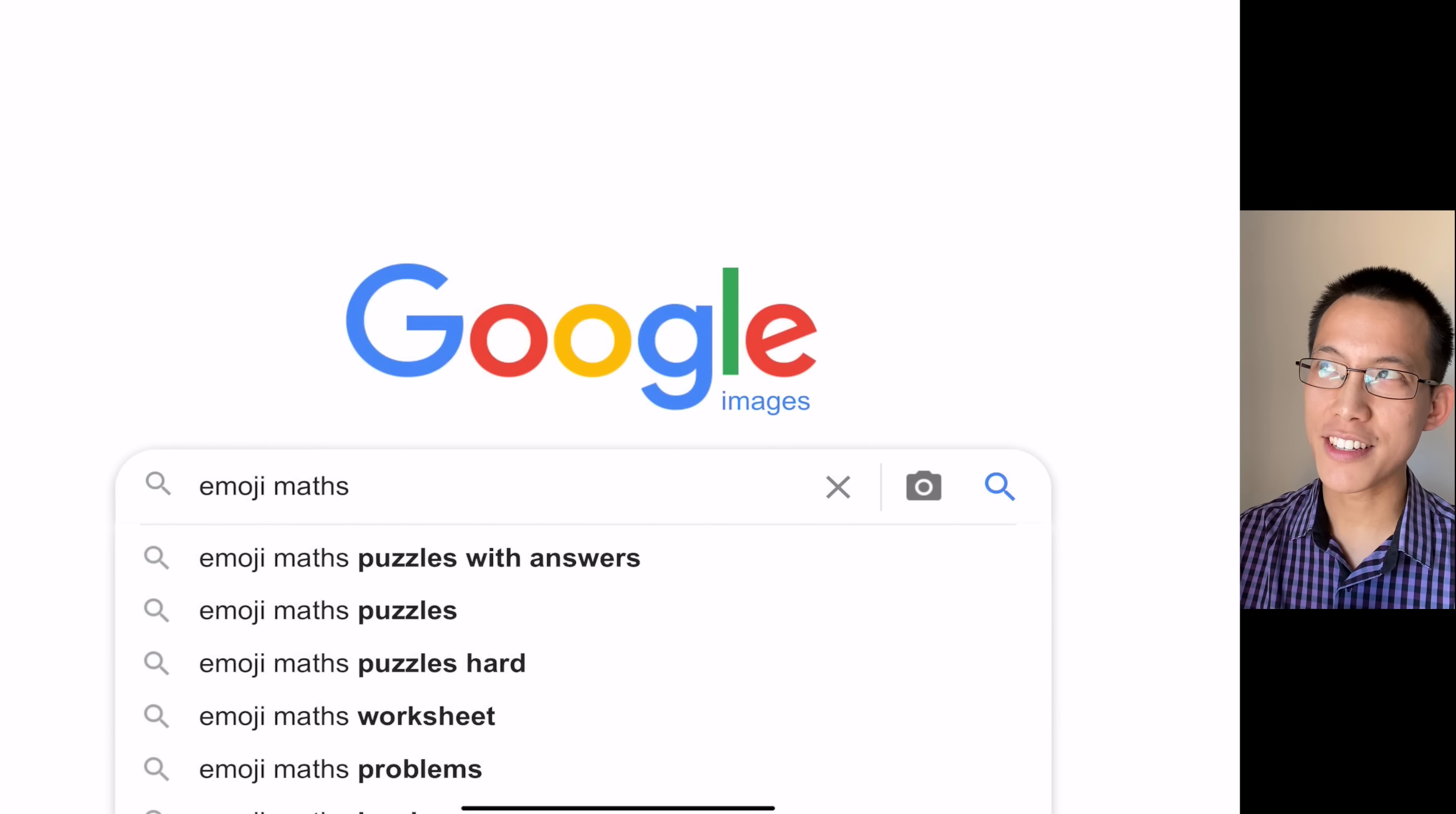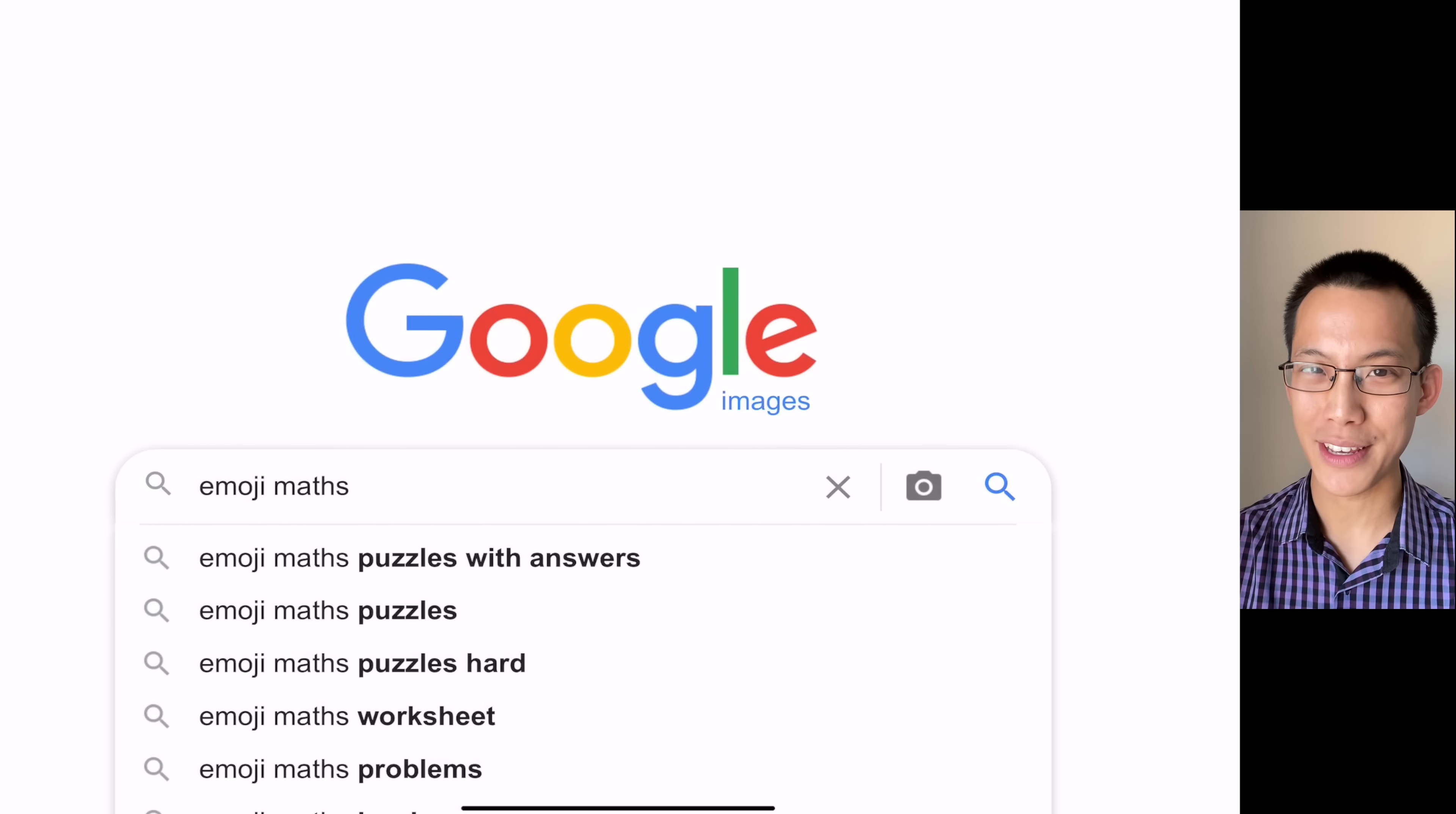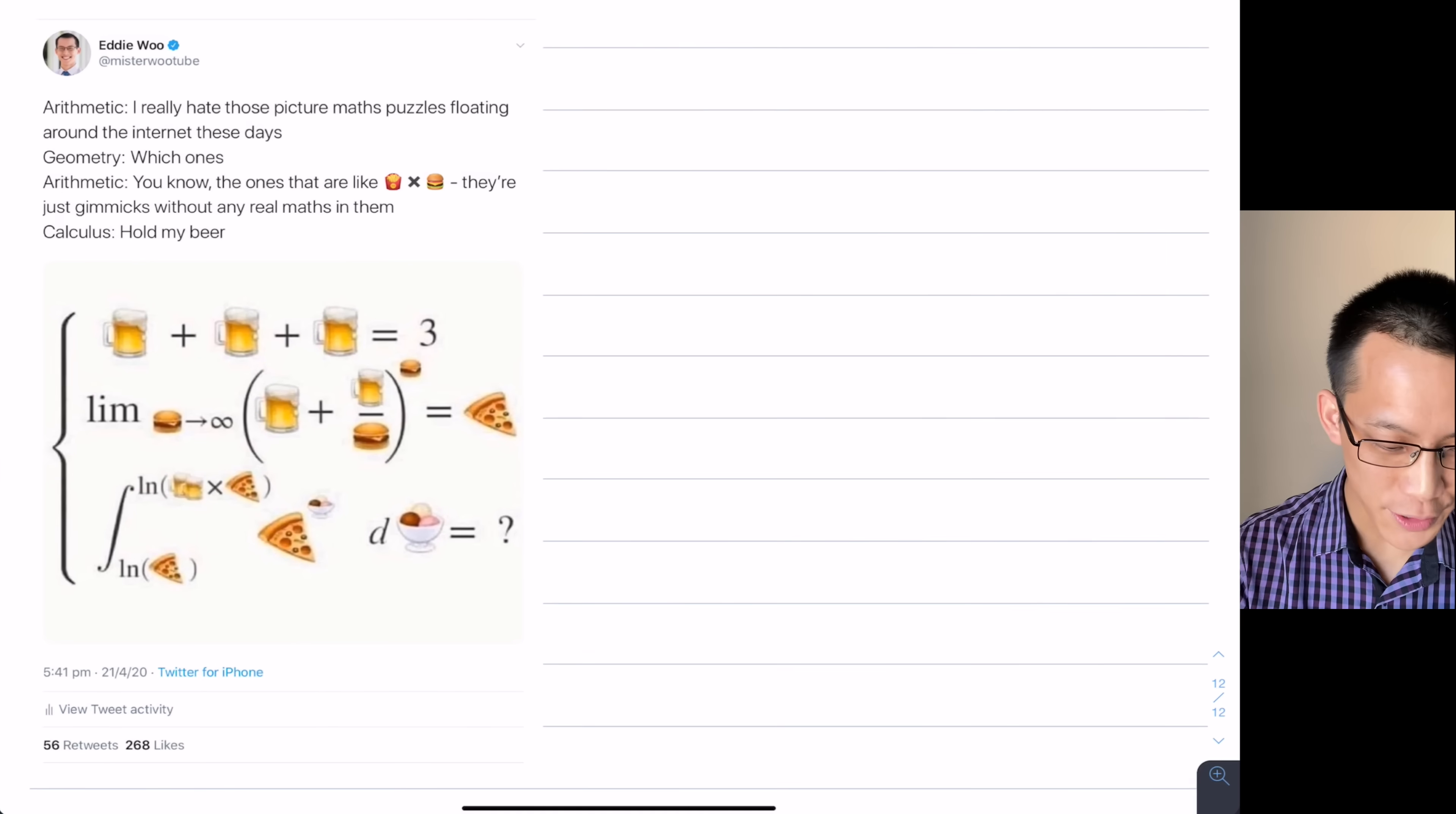Essentially it's just algebra - symbols that are in place of numbers and then you have to solve something. It's a system of simultaneous equations. One of the funniest things is the only thing more popular than emoji math puzzles is emoji math puzzles with answers, which is hilarious. When I posted this in a bunch of different places, there was lots of confusion about what the answer should be, and it's true there is some ambiguity built into the puzzle.